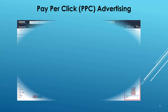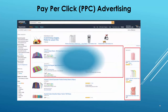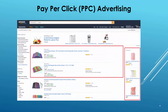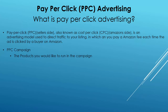Running a PPC campaign gives us the ability to place our product under the sponsored section, as shown here. Our products can then be listed at the top of the first page or on the side of the first page, in plain sight for Amazon customers to view.